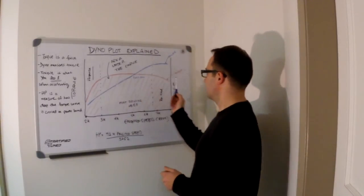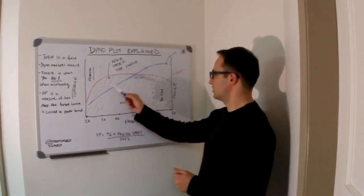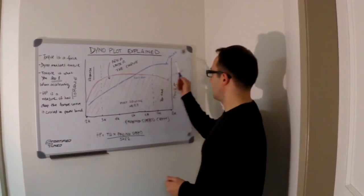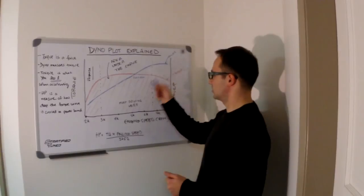On this plot right here, we have the red curve, which is representing a torque curve, and then the horsepower, which is in blue.